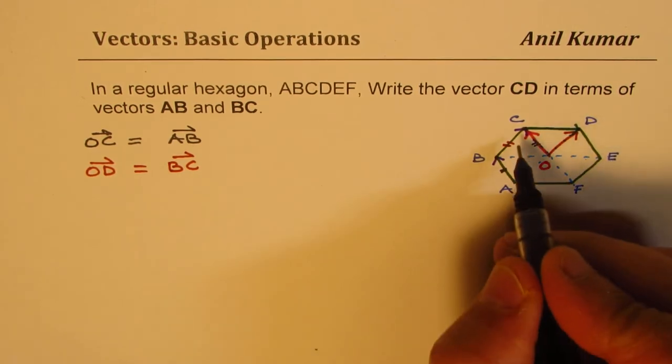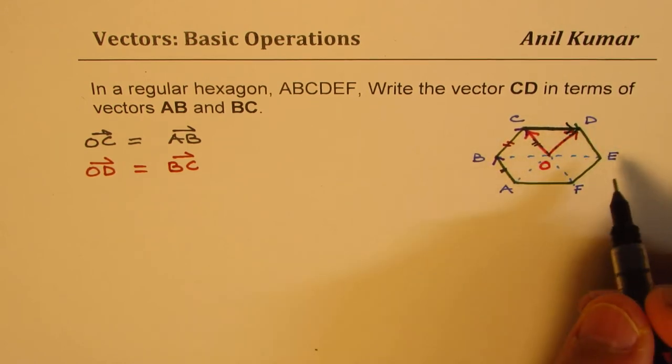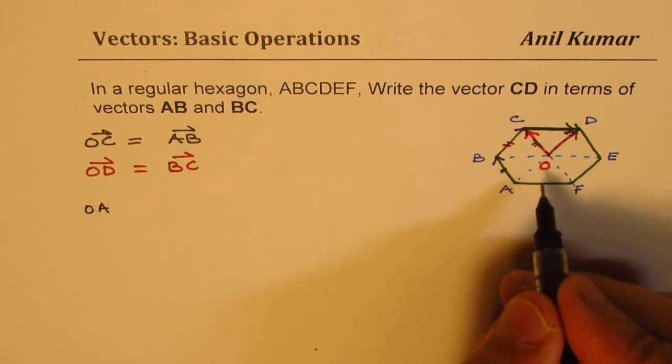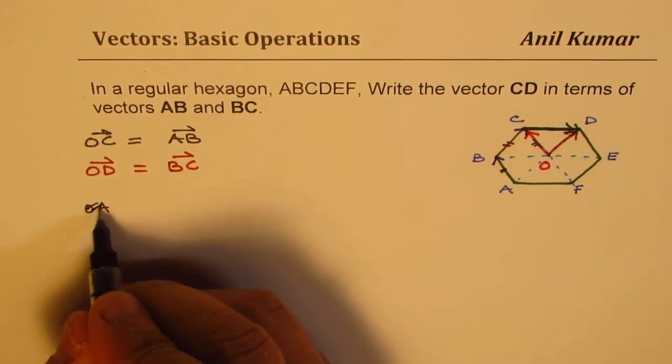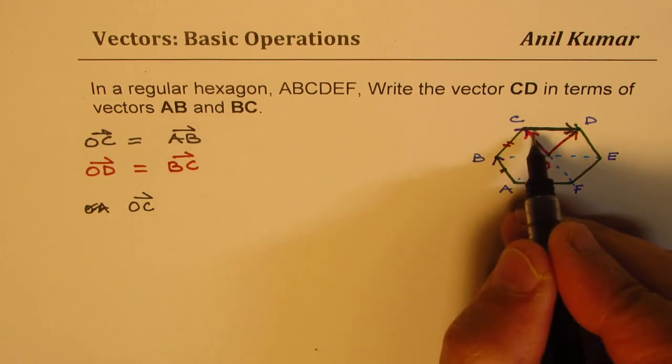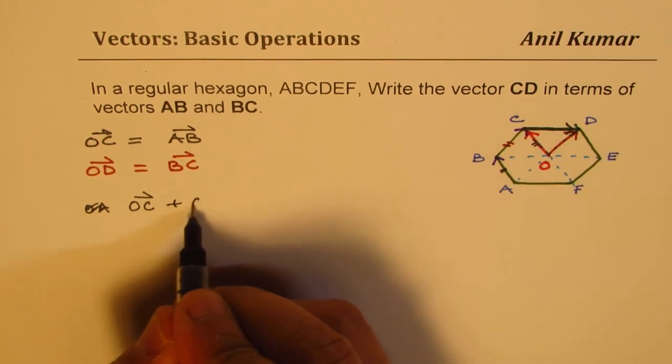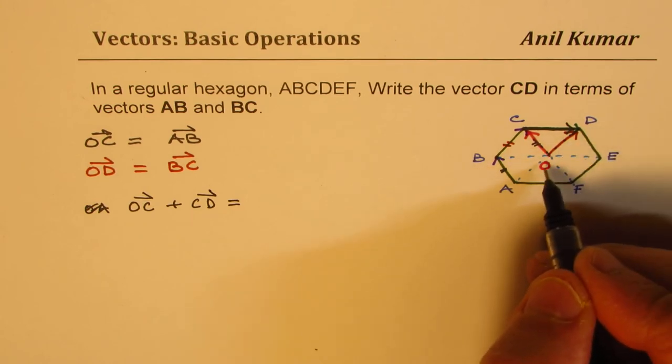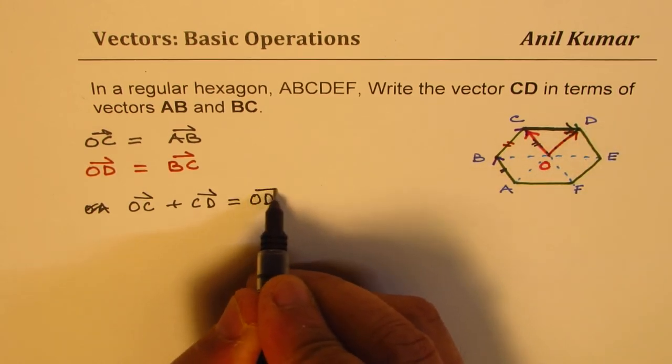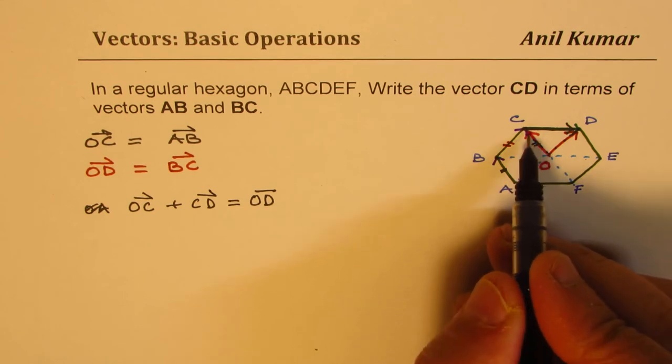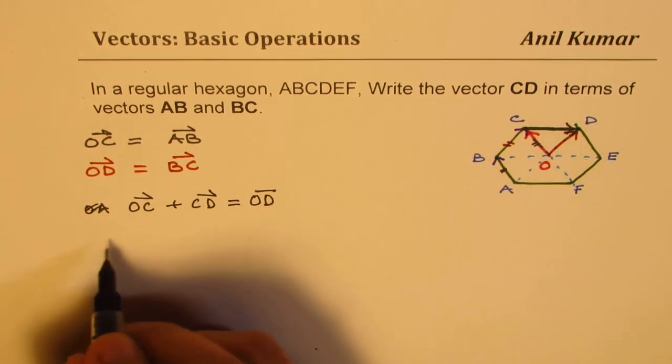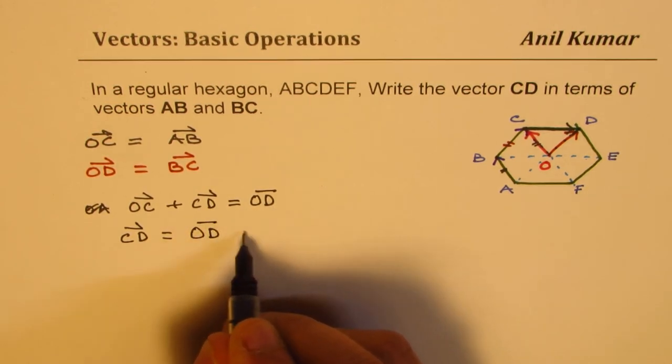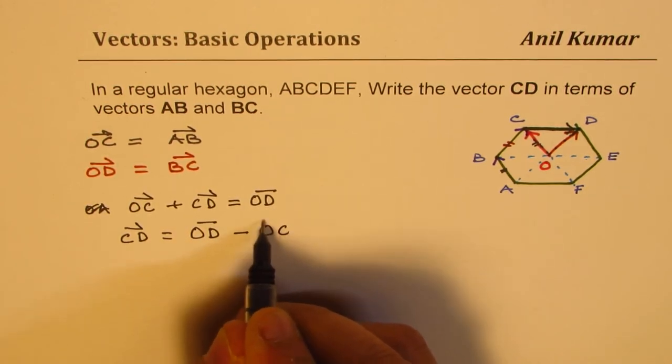And now we need to figure out what is C to D. That is what we want. So you can say OC plus CD is equal to OD, and then CD this vector CD will be equal to OD minus OC.